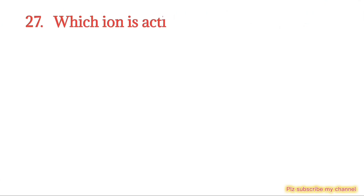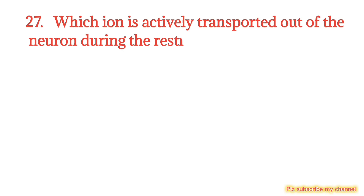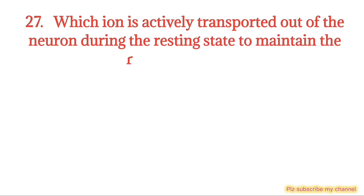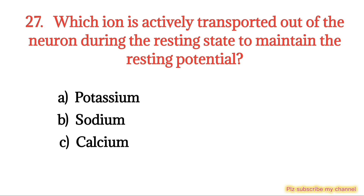MCQ number 27. Which ion is actively transported out of the neuron during the resting state to maintain the resting potential? Option A: Potassium. Option B: Sodium. Option C: Calcium. Option D: Fluoride. The right option is Option B.